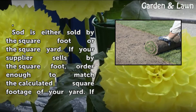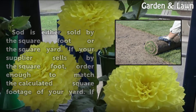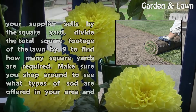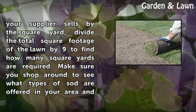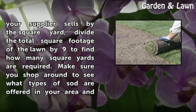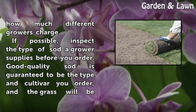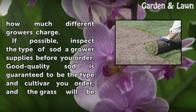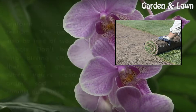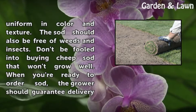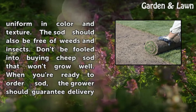Sod is either sold by the square foot or the square yard. If your supplier sells by the square foot, order enough to match the calculated square footage of your yard. If your supplier sells by the square yard, divide the total square footage of the lawn by 9 to find how many square yards are required. Make sure you shop around to see what types of sod are offered in your area and how much different growers charge. If possible, inspect the type of sod a grower supplies before you order. Good quality sod is guaranteed to be the type and cultivar you order, and the grass will be uniform in color and texture. The sod should also be free of weeds and insects. Don't be fooled into buying cheap sod that won't grow well.